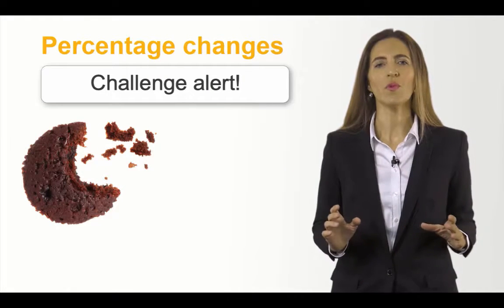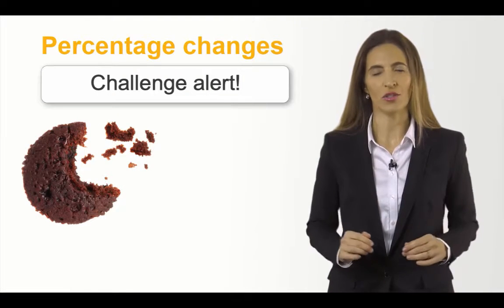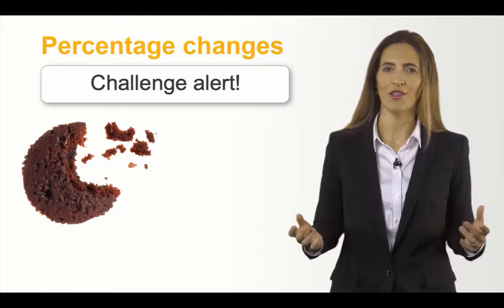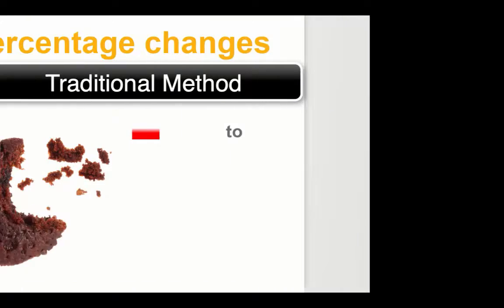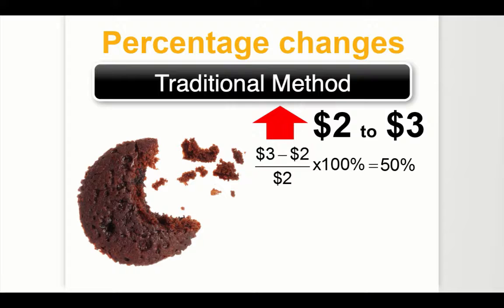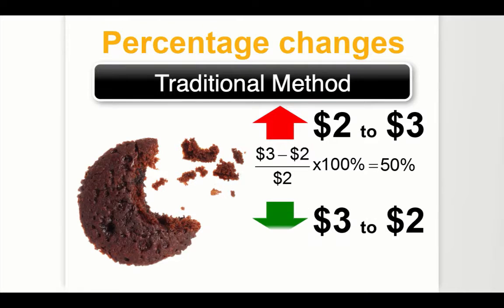Suppose we are talking about a $1 change in the price of a chocolate cake. If the price increases from $2 to $3, the percentage change in price is 50%. But if the price decreases from $3 to $2,